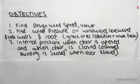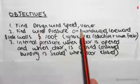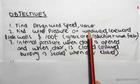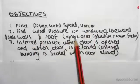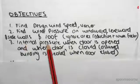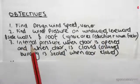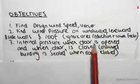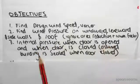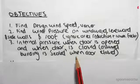The things we're going to be looking at include: finding the design wind speed v subscript des comma theta; finding the wind pressure on the windward, leeward, and sidewalls and roof, ignoring area reduction and combination factor; and finding the internal pressure when a door is open and when the door is closed, assuming the building is essentially sealed when the door is closed.